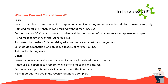What are the pros and cons of Laravel? Pros: Laravel uses a Blade template engine to speed up compiling tasks, and users can include the latest features easily. Bundled modularity enables code reusing without hassle. Best-in-class ORM makes database relations appear simple. It fixes most common technical vulnerabilities. An outstanding Artisan CLI comprises advanced tools for tasks and migrations. Splendid documentation with reverse routing support. Automation testing works well. Cons: Laravel is quite slow and a new platform for most developers. Amateur developers face problems extending code and working with classes. Community support is not as wide as other platforms. Many methods in reverse routing are complex.